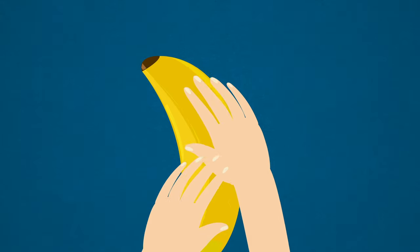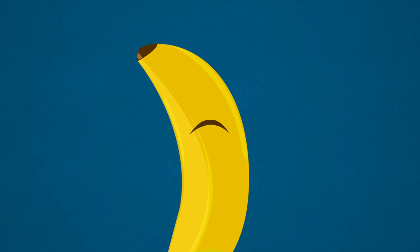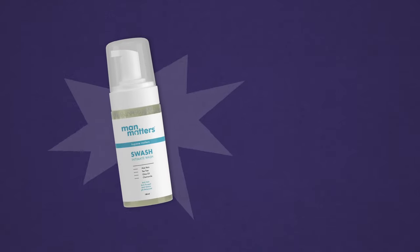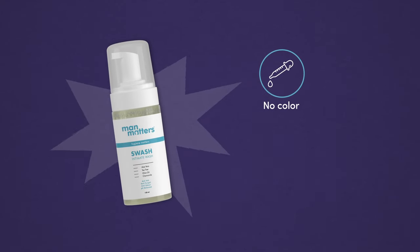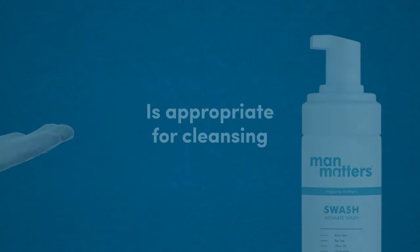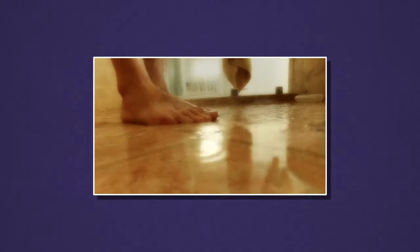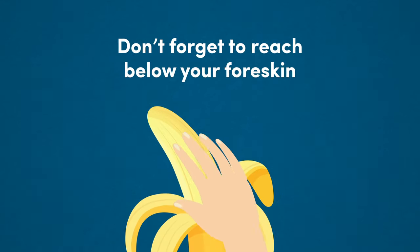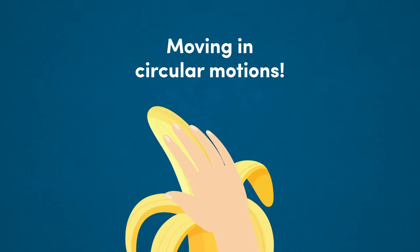Harsh movements using astringent and antibacterial soaps do more harm than good for your soldier. Using an intimate wash or soap with no colour or scent is appropriate for cleansing. Work up a lather, rinsing your intimate area with a soft hand. Don't forget to reach below your foreskin, moving in circular motions.